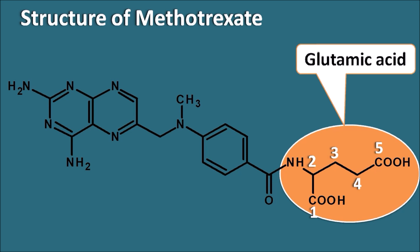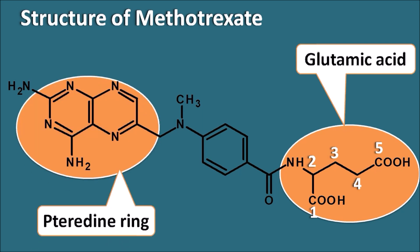Another important moiety present in methotrexate is the pteridine ring system. The pteridine ring system is a fused ring system with four nitrogens. Numbering begins from the nitrogen of the pyrimidine ring, and two important amino groups are present at the second and fourth positions — making it a 2,4-diaminopteridine ring system.